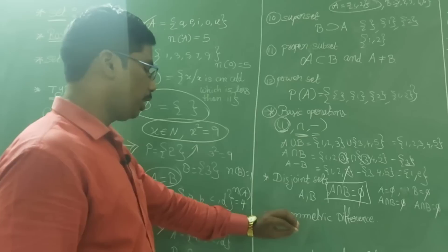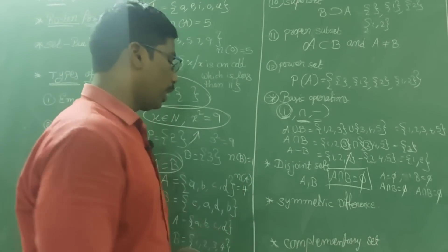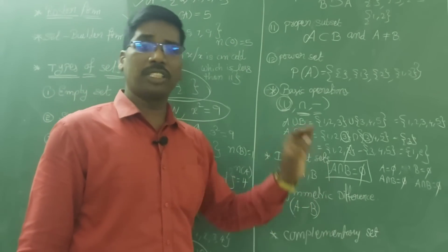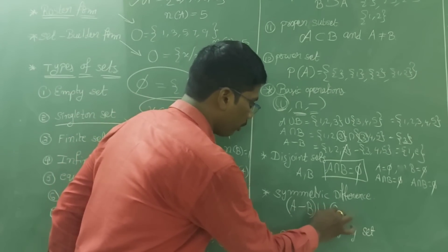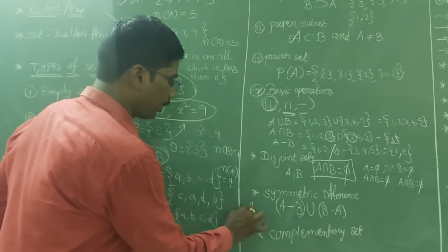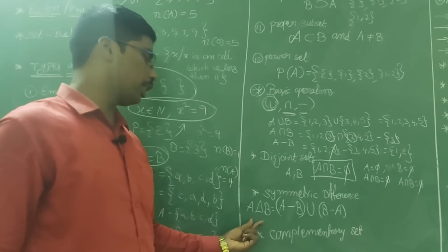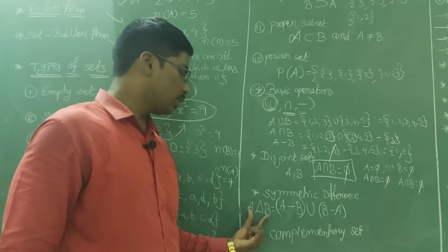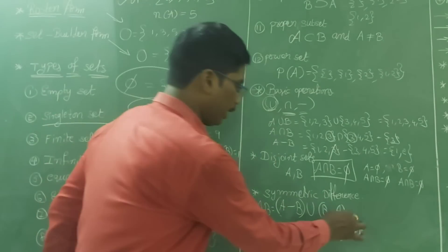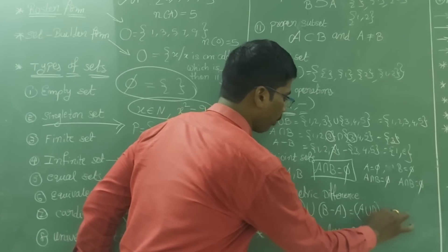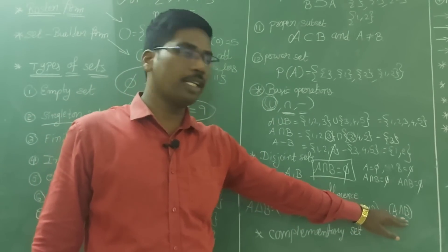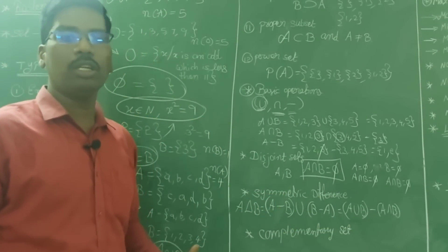Symmetric difference — very important: A Δ B is defined as (A − B) ∪ (B − A). A − B means elements present in A but not in B; B − A means elements present in B but not in A. Together that is the symmetric difference. Alternatively, A Δ B = (A ∪ B) − (A ∩ B): take the union and subtract the intersection. Both formulas give the same result.